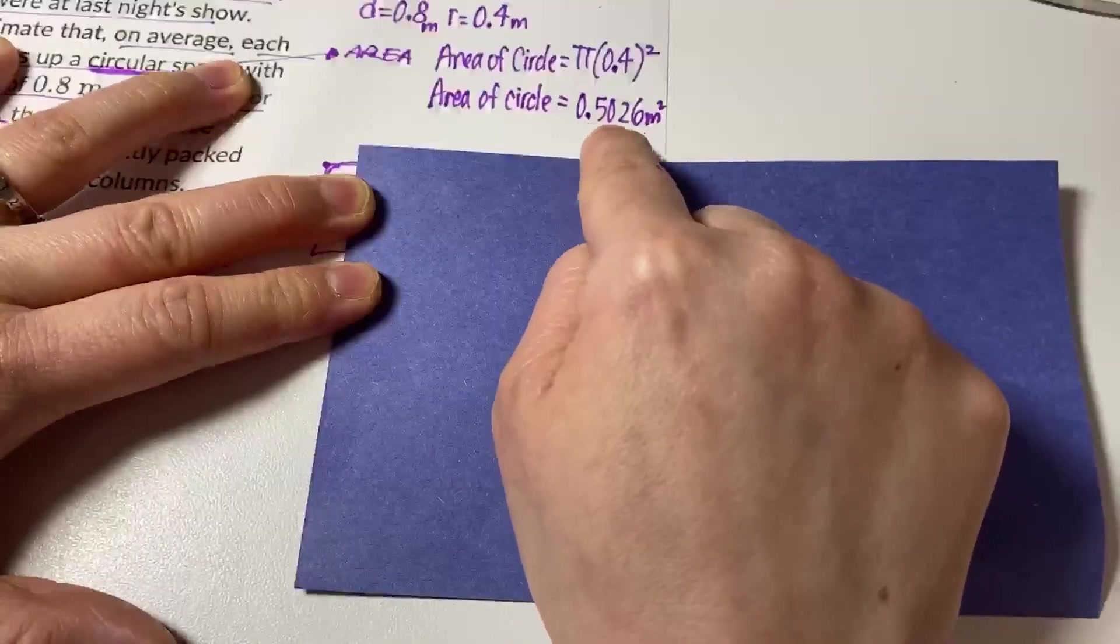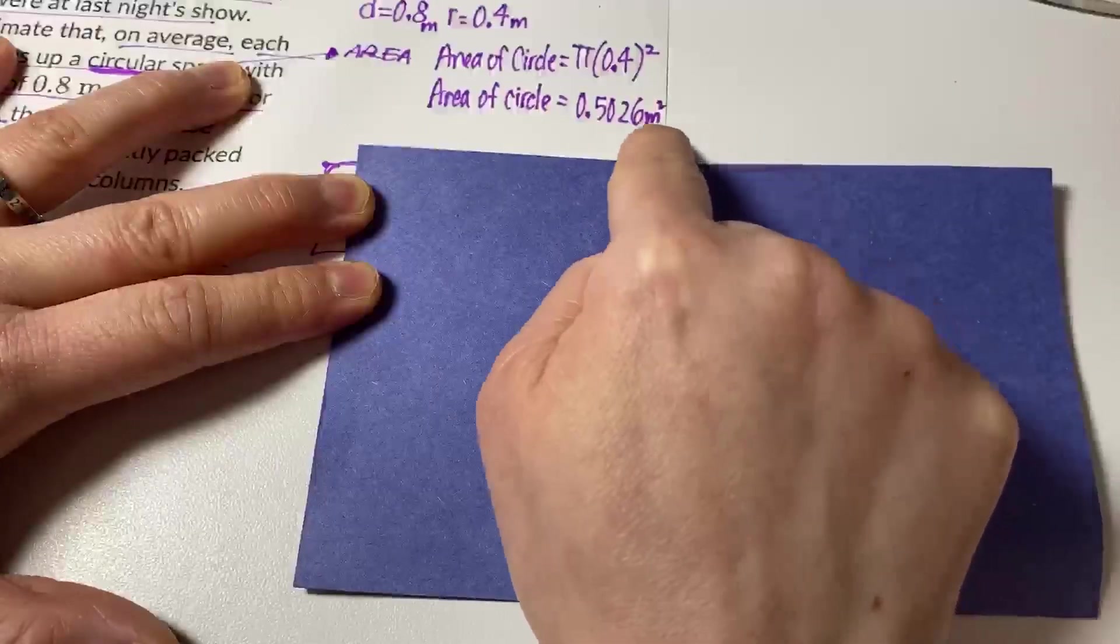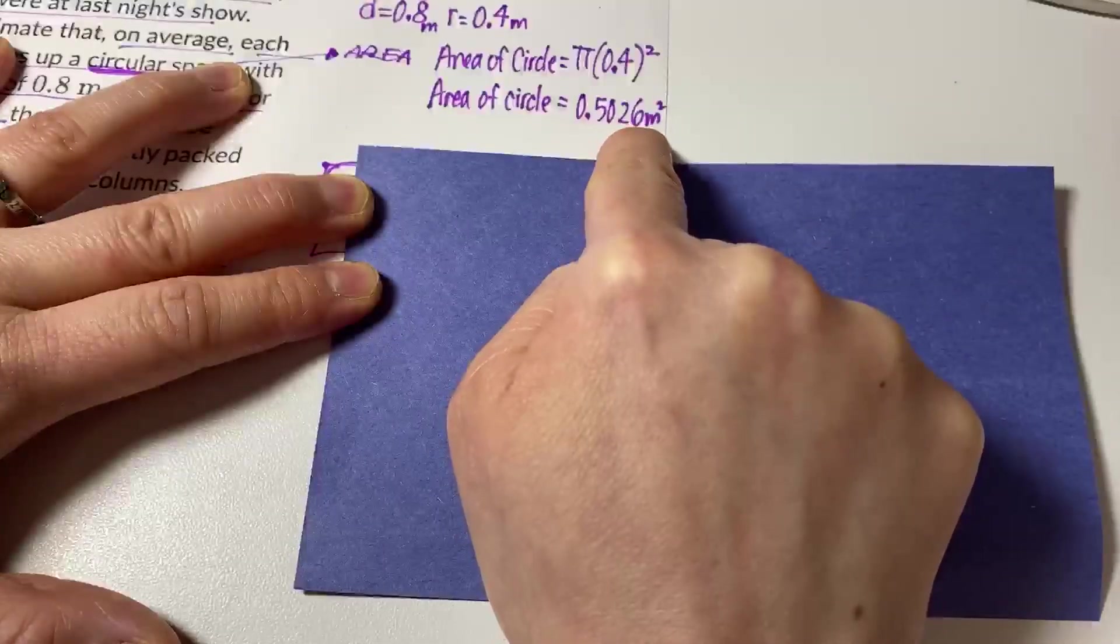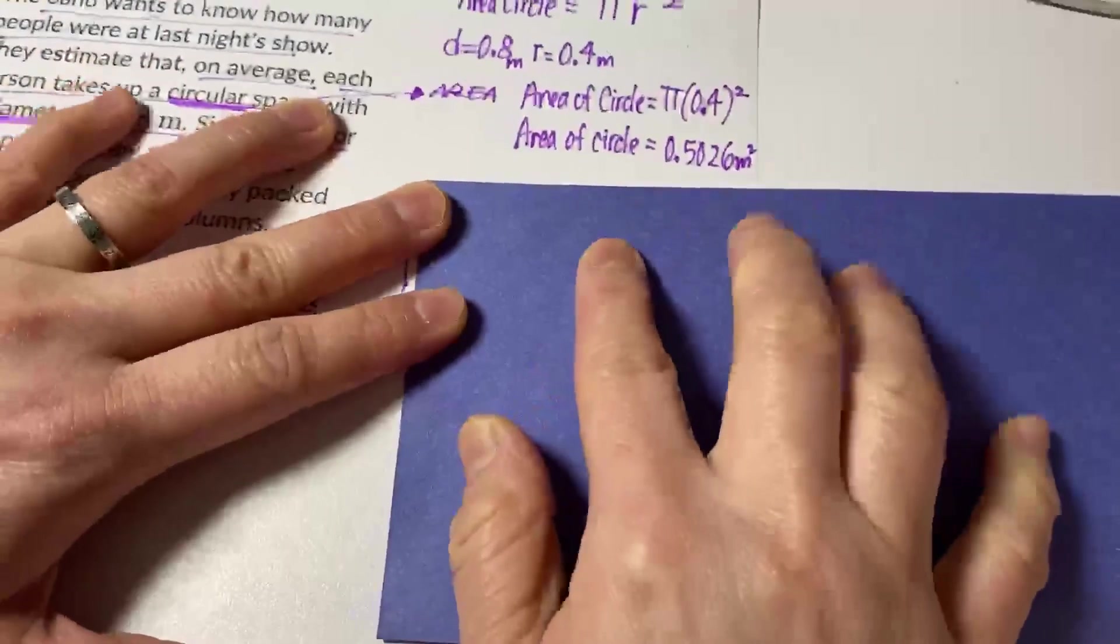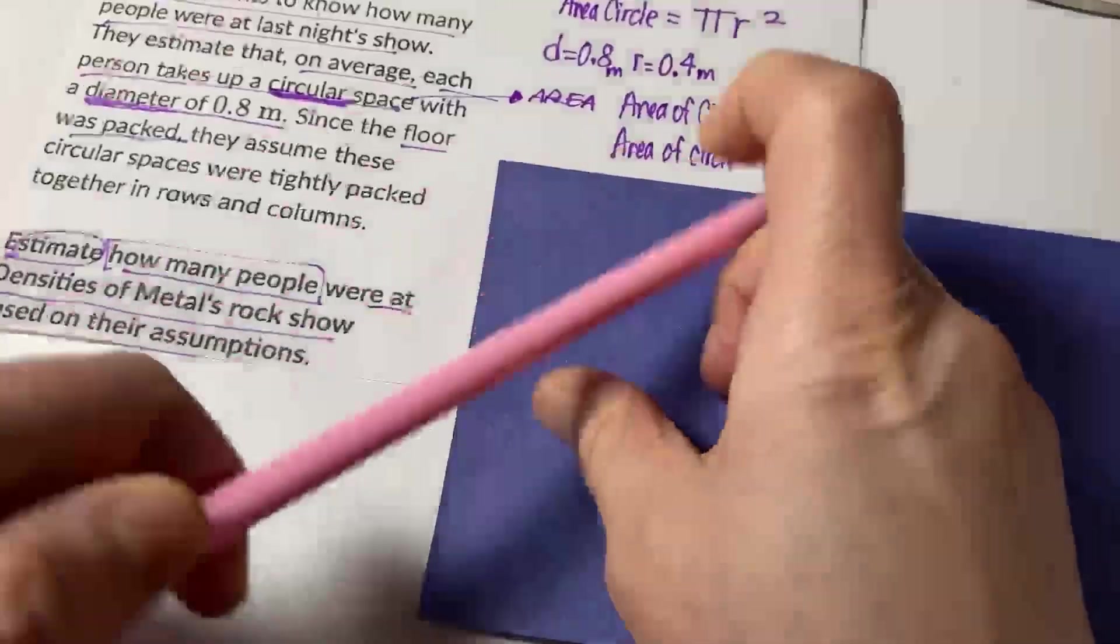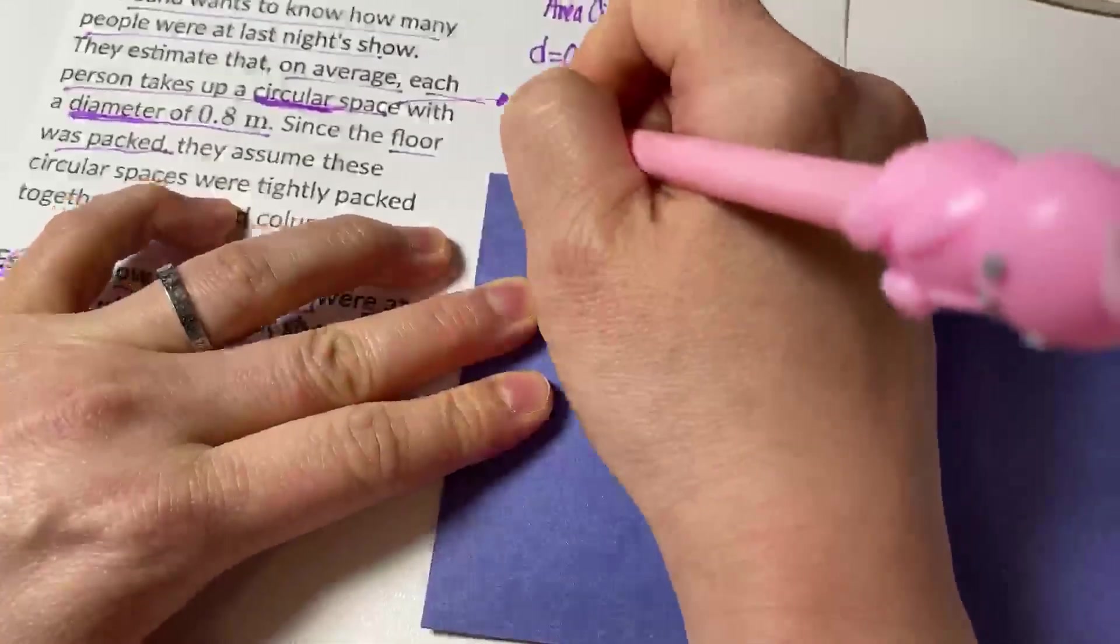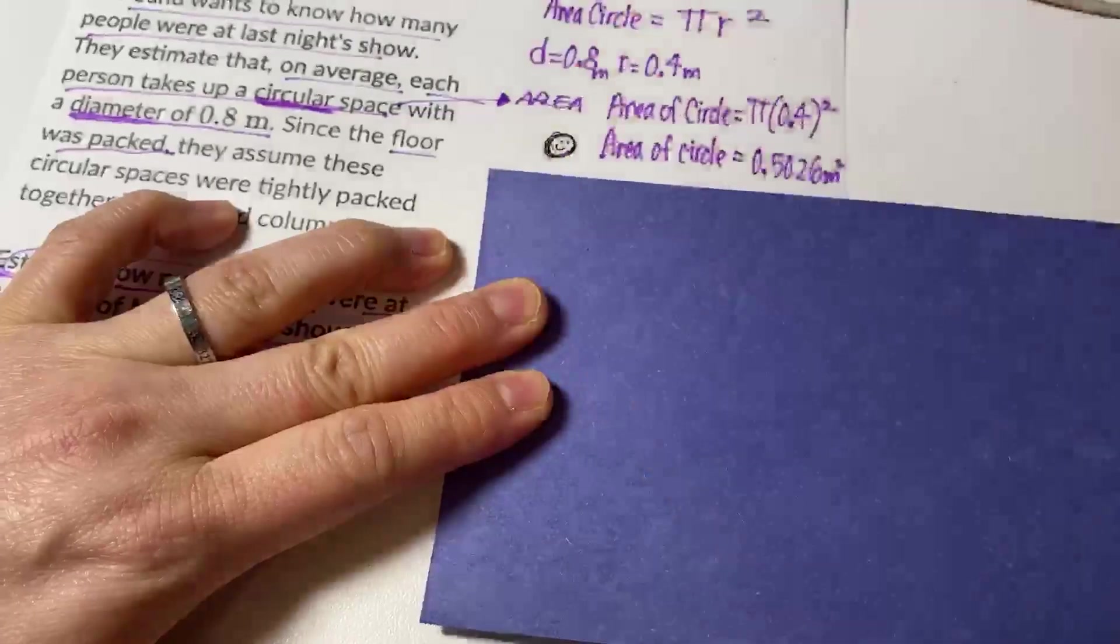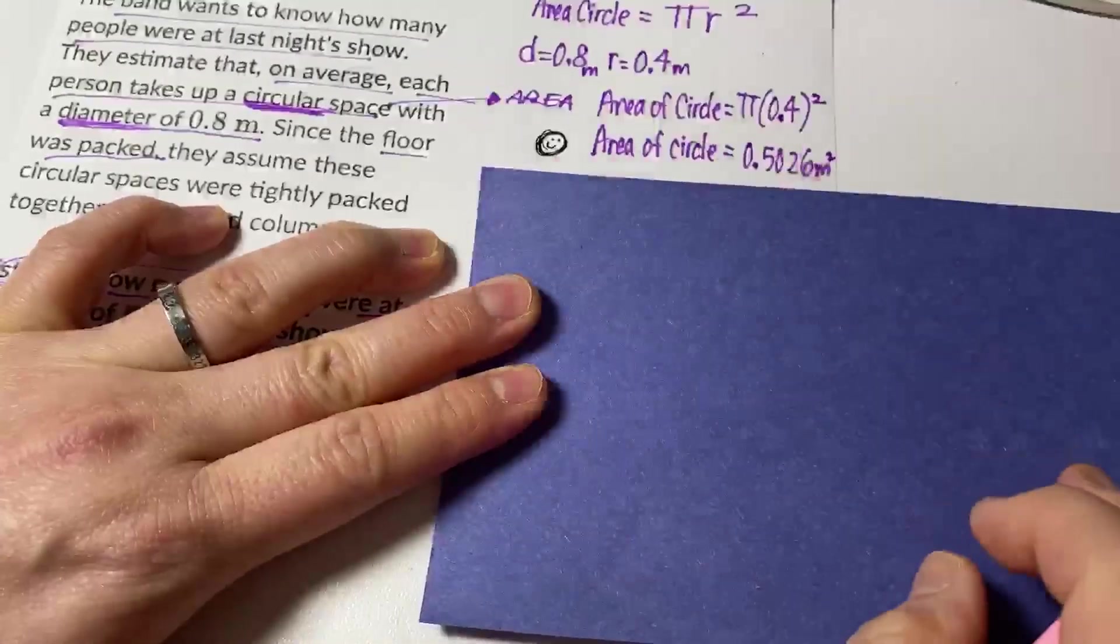Once again, in the calculator, they had a lot of numbers on the screen, but I copied the whole number and four numbers after the decimal. So just to be clear, they said each person takes up this circular space. So imagine each of these circular spaces, that's a person. So I'm just going to draw a little happy face. So that's a person.